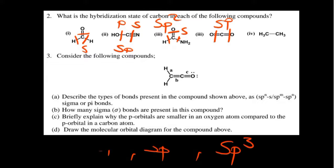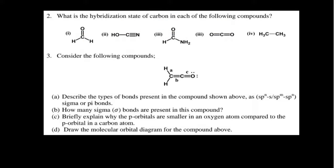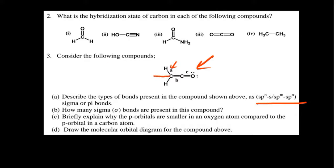The next question asks us to consider a given compound and describe the types of bonds present in it. They want us to identify the kinds of orbitals taking part in bond formation. Looking at bond 'a', which is between a hydrogen and a carbon, we first need to identify the hybridization of that carbon. This carbon has three connections — s, p, p — so the carbon is sp2 hybridized.